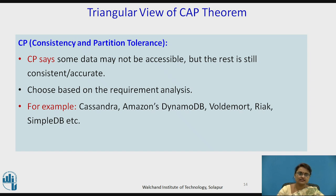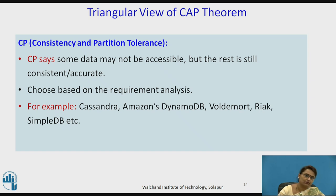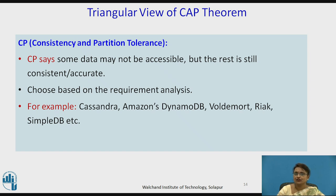Next comes Consistency and Partition Tolerance (CP). Some data may not be accessible, but the rest is still consistent and accurate. Availability may not be 100%, but the data being read is consistent and accurate, and partition tolerance is maintained — even if a partition exists, the system works. What it compromises is availability, as sometimes data may not be available. Examples include Cassandra, Amazon DynamoDB, Riak, SimpleDB, and others.